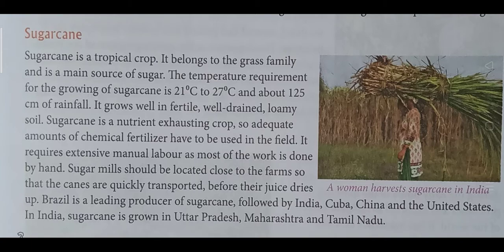In India, sugarcane is grown in Uttar Pradesh, Maharashtra, and Tamil Nadu. To summarize, sugarcane requires a temperature between 21°C to 27°C, about 125 centimeters of rainfall, fertile well-drained loamy soil, adequate chemical fertilizer, and extensive manual labor. Brazil is the leading producer, followed by India, Cuba, China, and the United States.